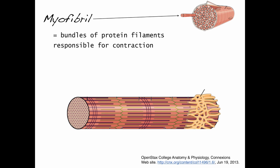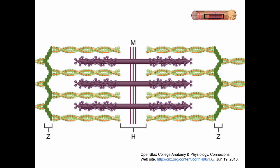Some of the proteins contained within the myofibrils include a protein called actin, which you can see here in green, and a protein called myosin, which you can see in this burgundy purple. And if we look at our myofibril and zoom in on something called a sarcomere, we've got our actin in green and our myosin here in purple.